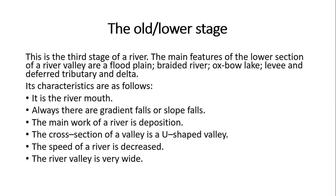The characteristics of the lower stage are as follows. First, it is the river mouth — in this stage the river reaches the river mouth. Second, there are gradient falls or slope falls. Third, the main work of the river is deposition — deposition mainly occurs in this old or lower stage. Fourth, the cross-section of the valley is a U-shaped valley.